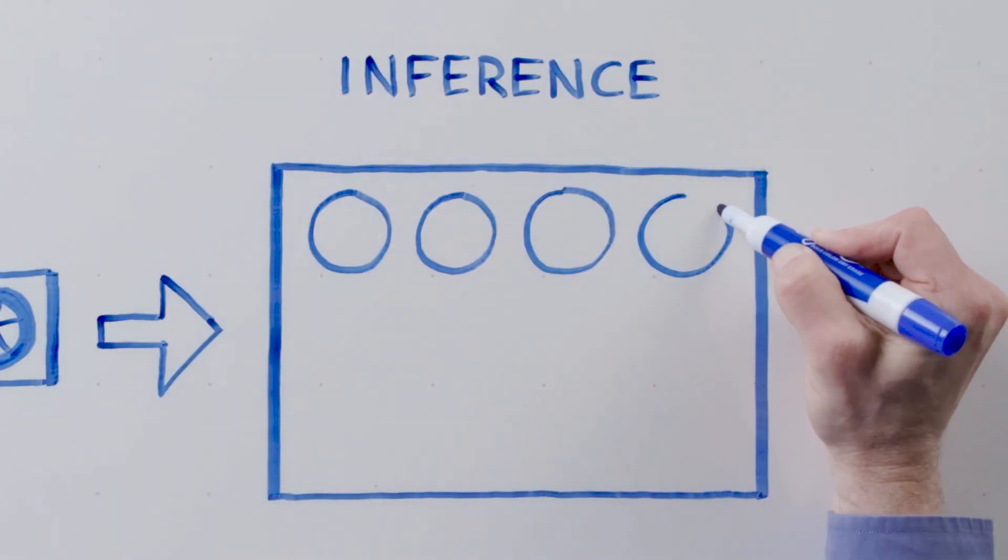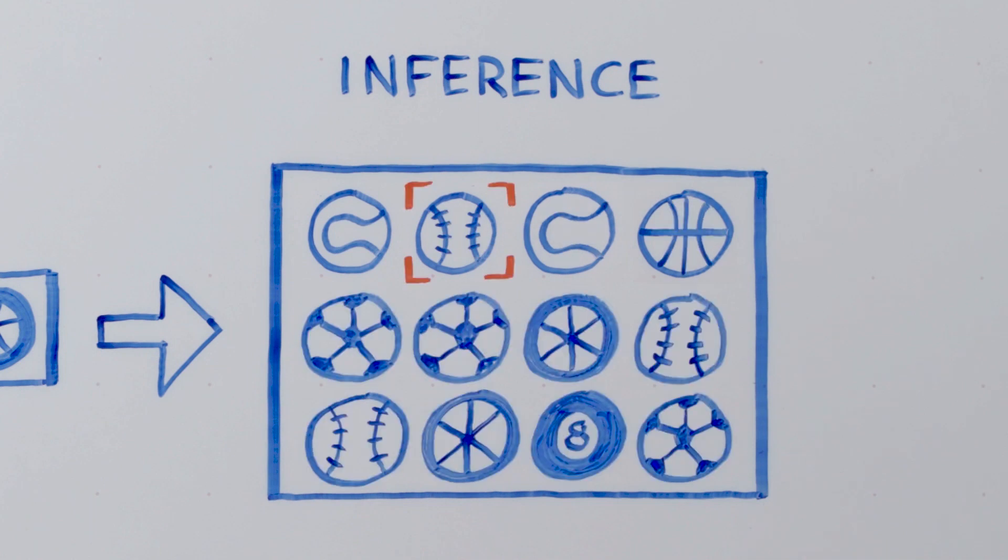You can use that model to detect whether or not there's a baseball in it or some other type of round object like a tire or a tennis ball or a soccer ball.